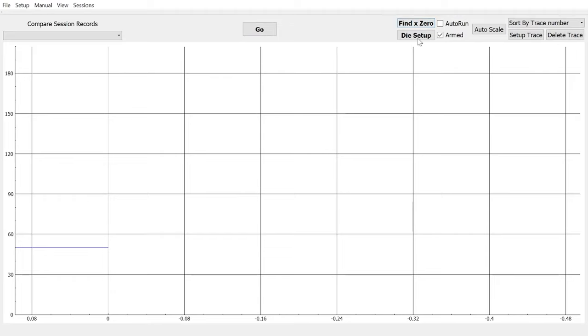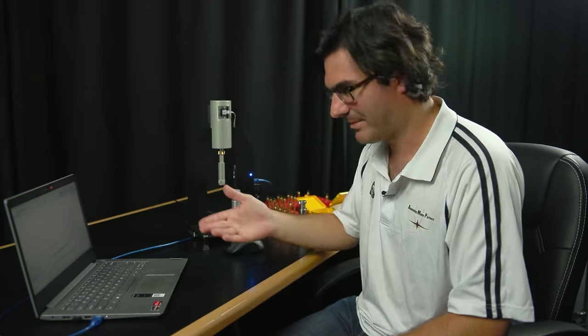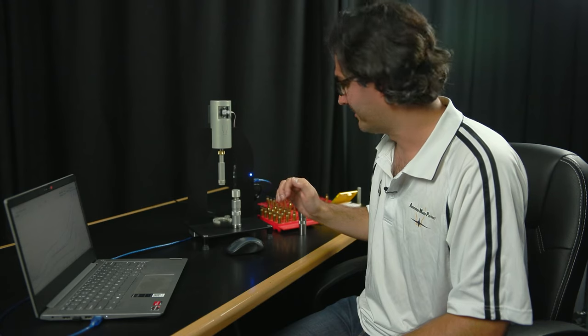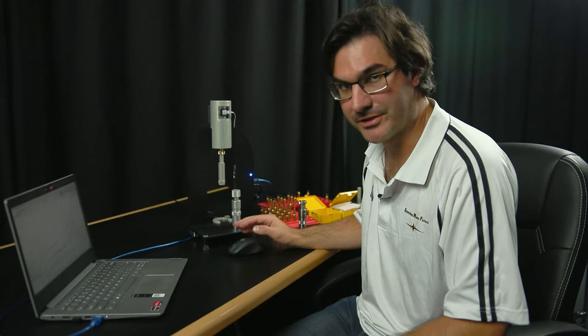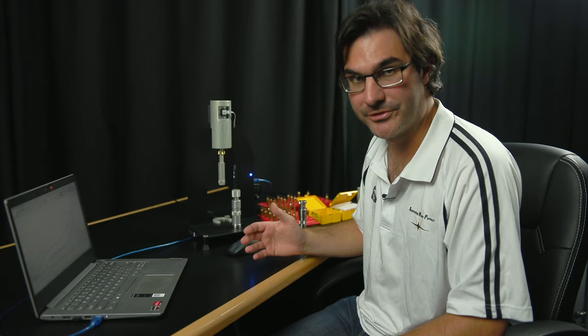Below that, we've got Die Setup. That allows you to activate the RAM without making any traces or recording any data. It simply allows you to work the RAM in order to set up your die. To the right of that, we've got Armed. That's just a check box indicating that the press and software are ready to record data.